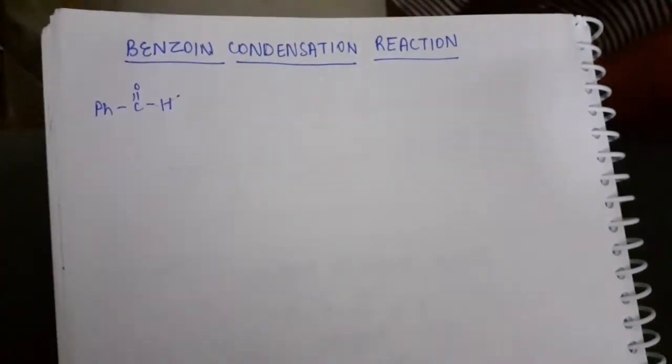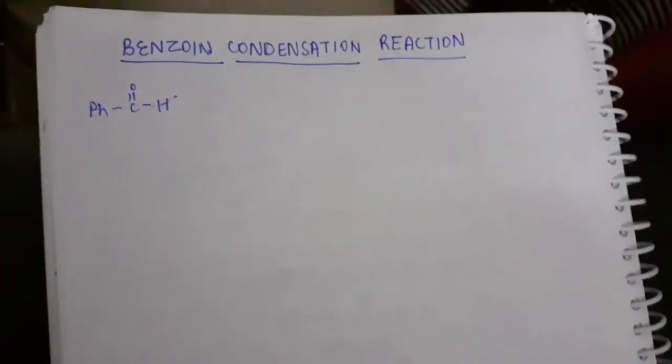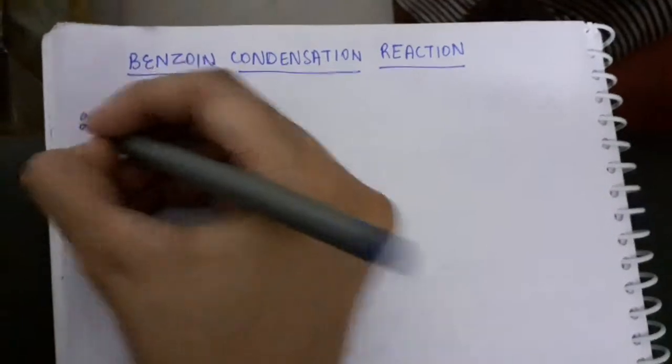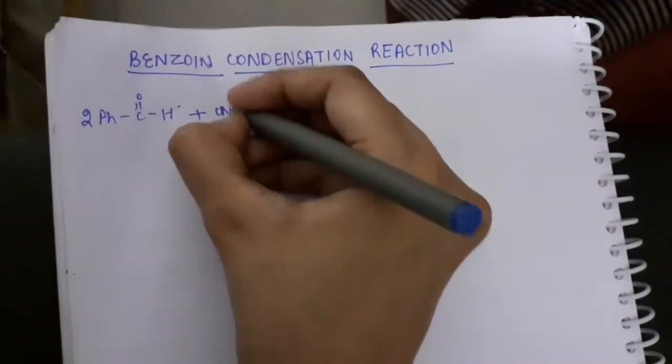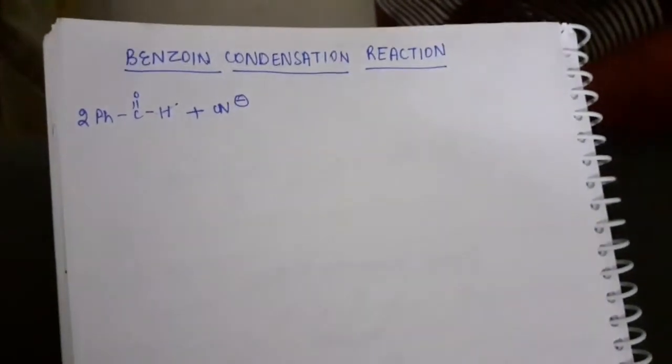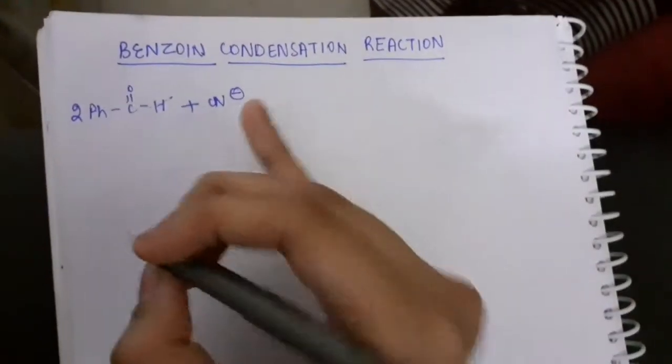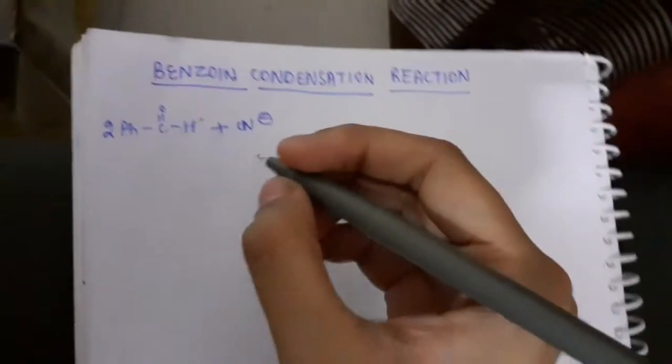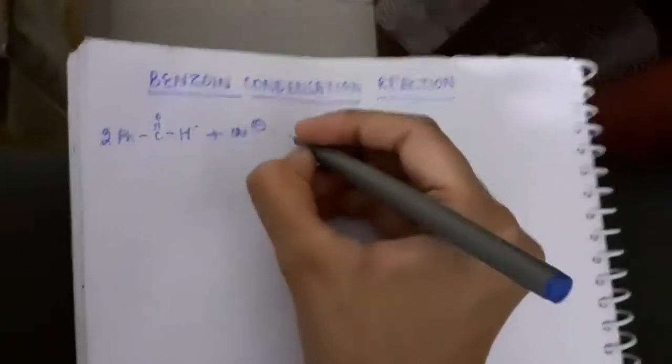Hence the name benzoin condensation reaction. What we actually do is take two moles of this benzaldehyde and use a cyanide ion in this reaction. This cyanide ion has significance - why do we use cyanide ion? We're going to be discussing this in a minute.